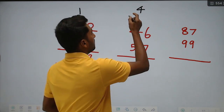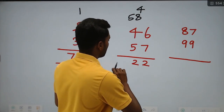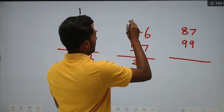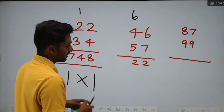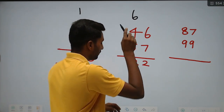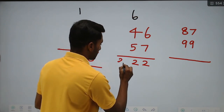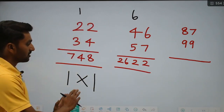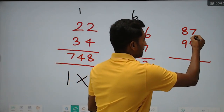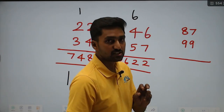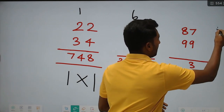58 plus 4 carry is equal to 62. Write down 2, carry 6. Next straight: the result gives us 63. From 63, write down 3, remaining carry is 6.